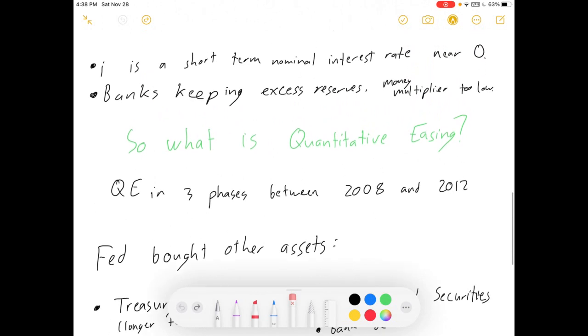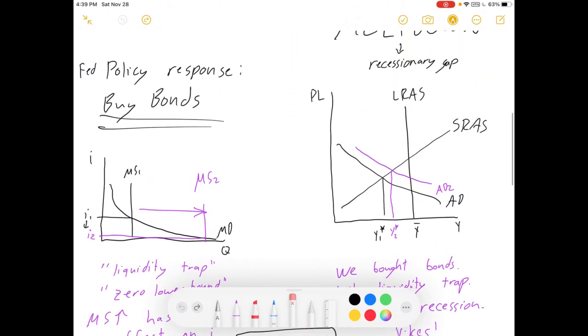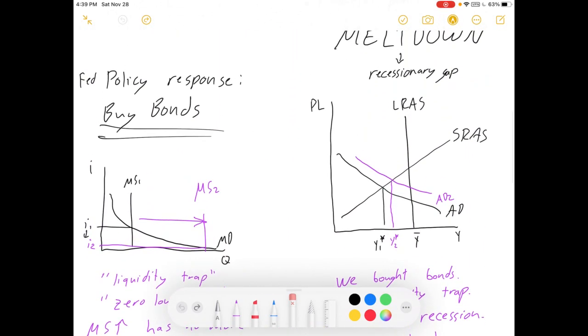So quantitative easing was our way to try to dodge the liquidity trap and also to inspire banks to lend a little more. And the hope would be to eventually see our aggregate demand increase even further until we get to something up in this range.